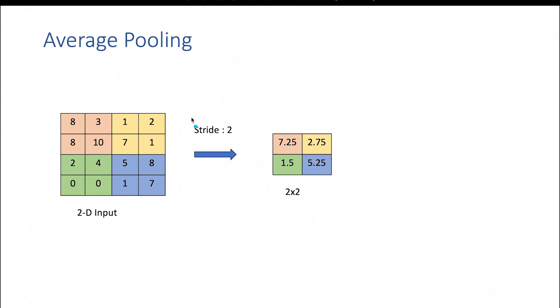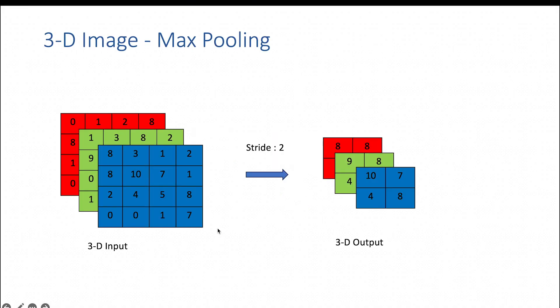How about average pooling? Instead of considering the maximum value, you take the average of all of the values present within the image patch, which is going to be 7.25, 2.75, 1.5, and 5.25 in the operations performed with a row stride of 2 and column stride of 2. You can do the math on identifying what the output shape could be using the formula we already have dealt with.